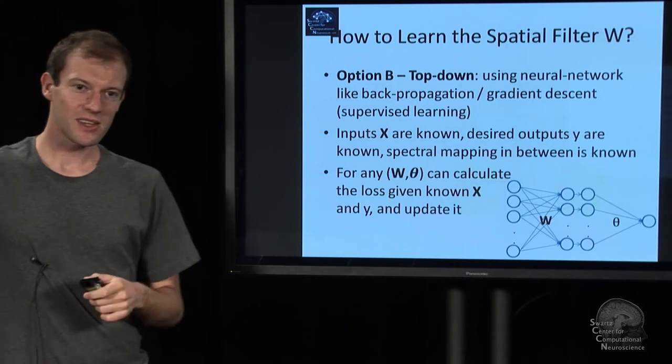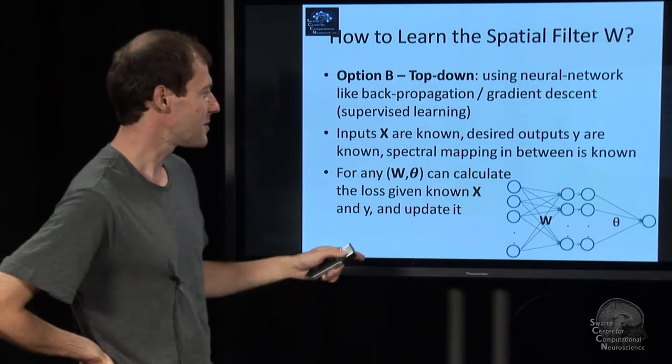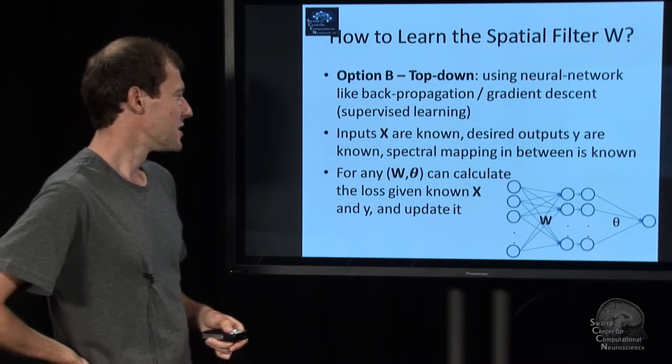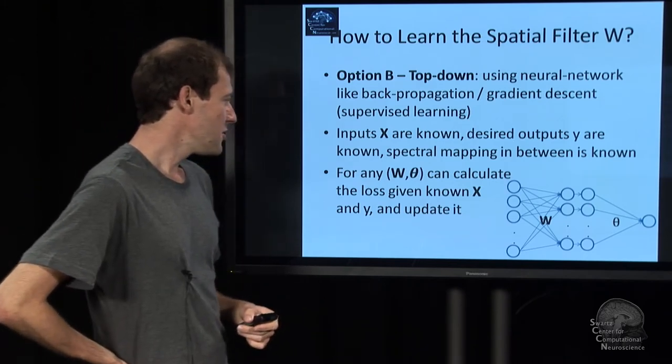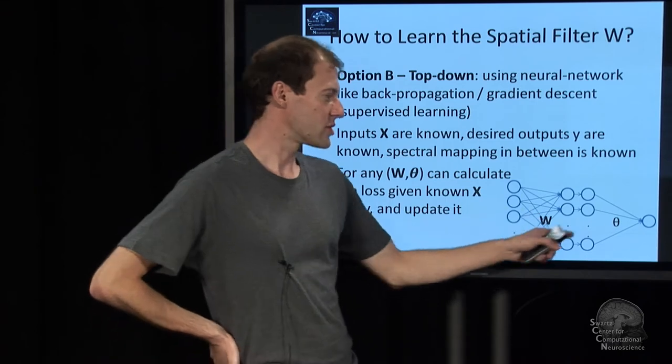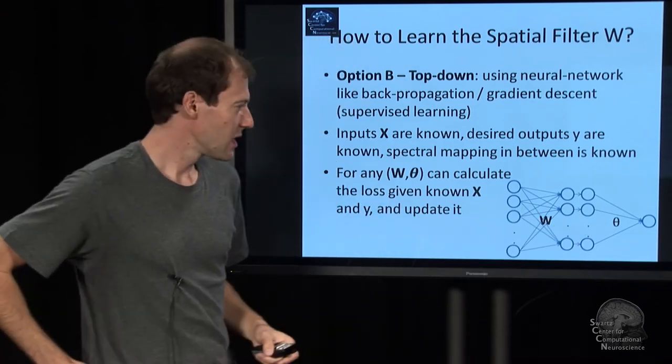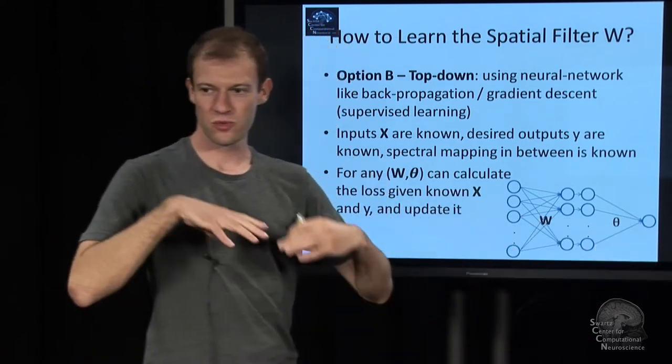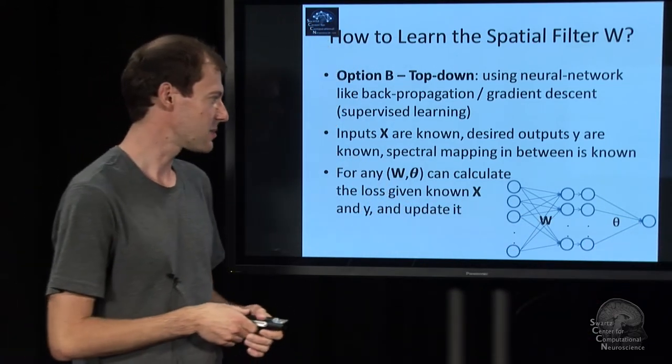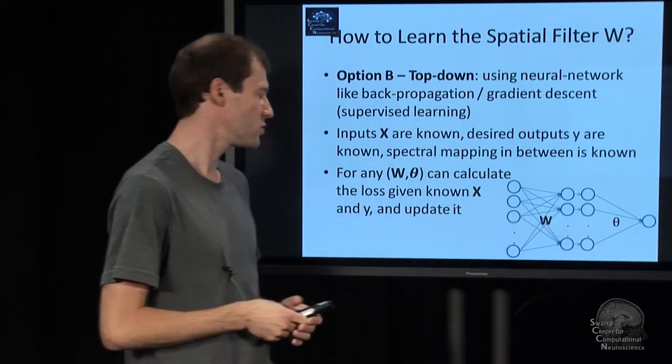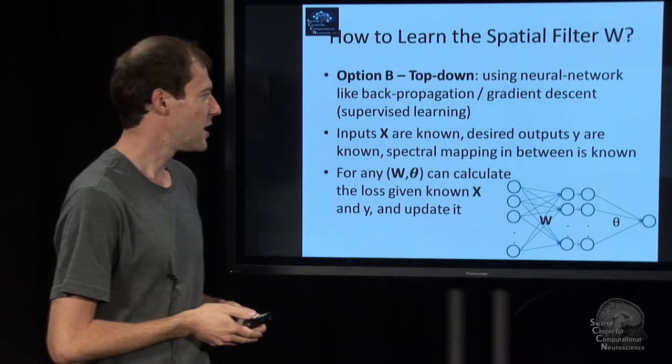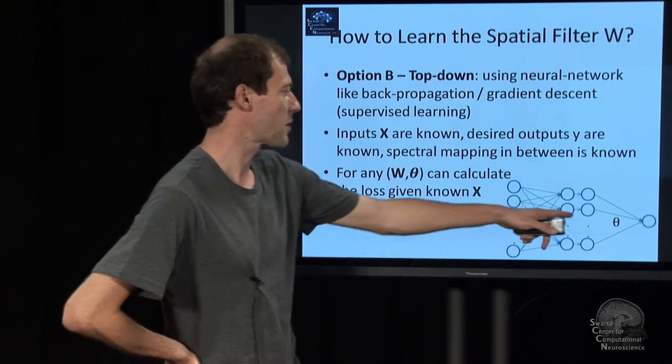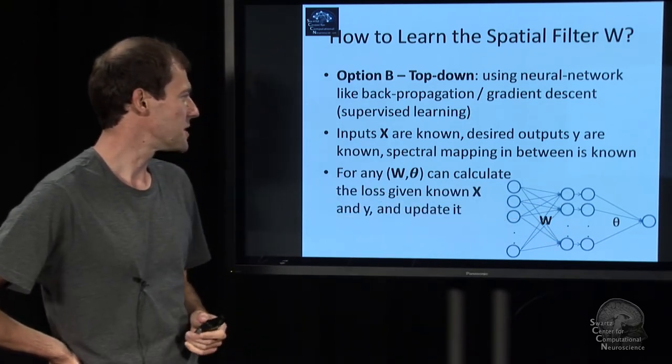So the second option to get the W is to actually do some calculation. And that is if you take some value for W and theta, and if you know the data and the labels, some example data or some example labels, you can basically optimize these two using gradient descent.